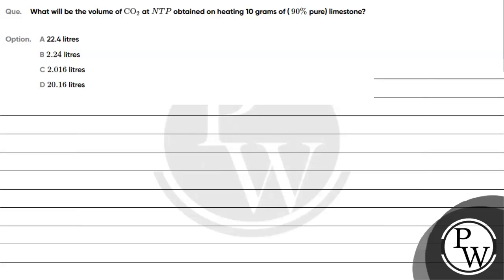Let's read this question. The question says: what will be the volume of CO₂ at NTP obtained on heating 10 grams of 90% pure limestone? Option A: 22.4 liters. Option B: 2.24 liters. Option C: 2.016 liters. Option D: 20.16 liters. The key concept for this question is: